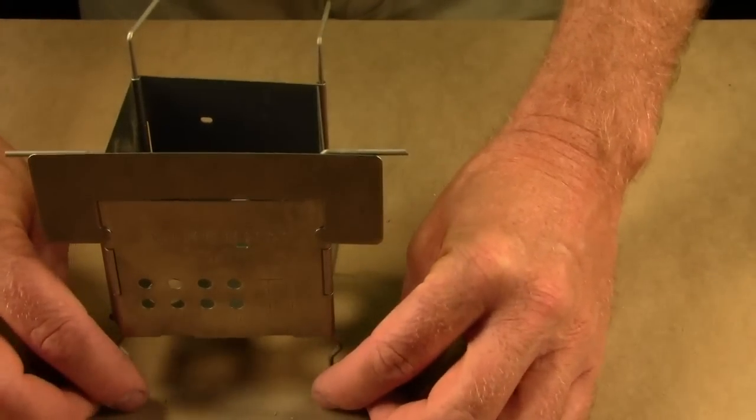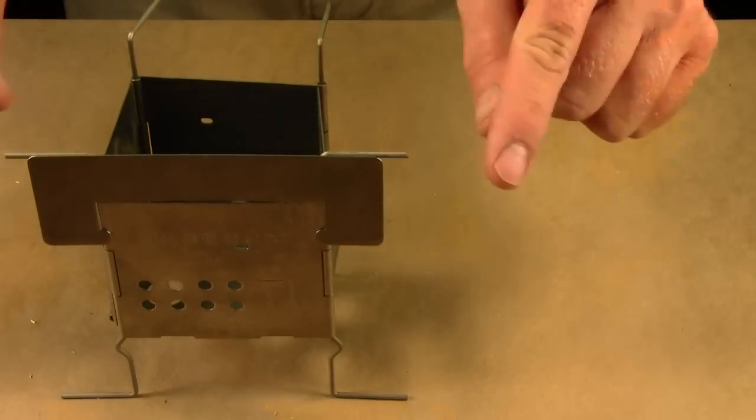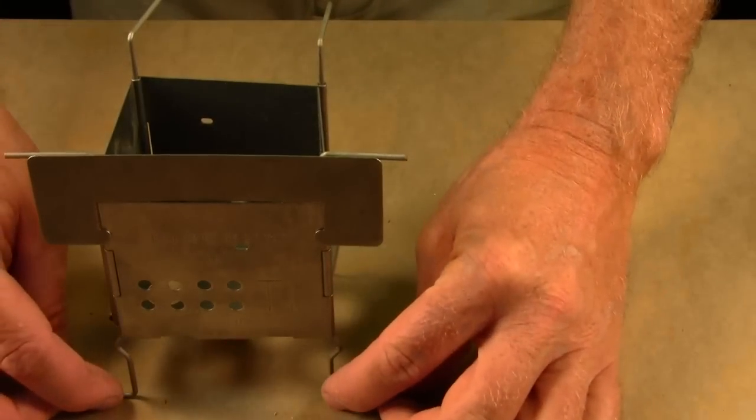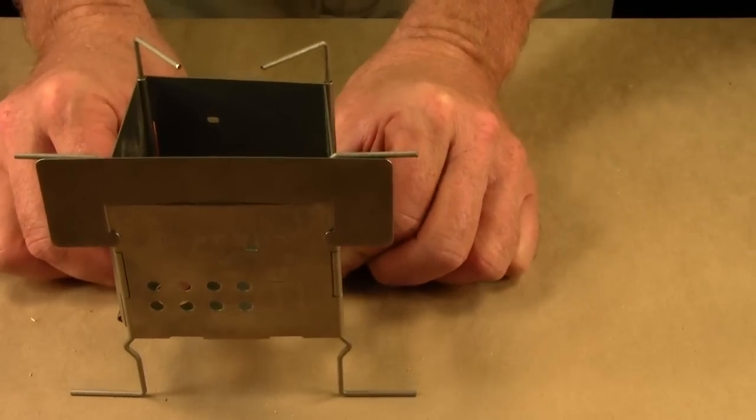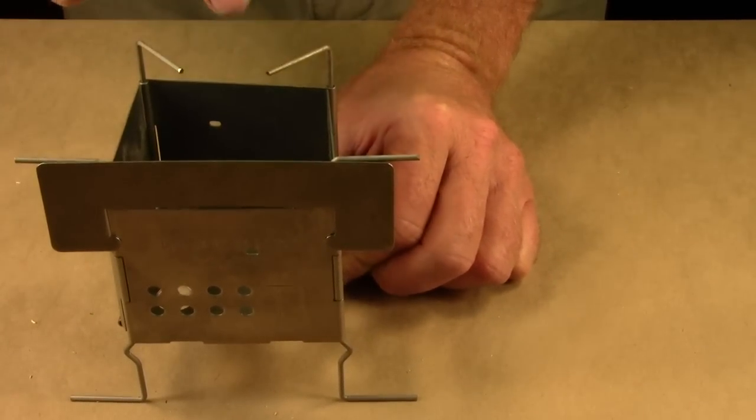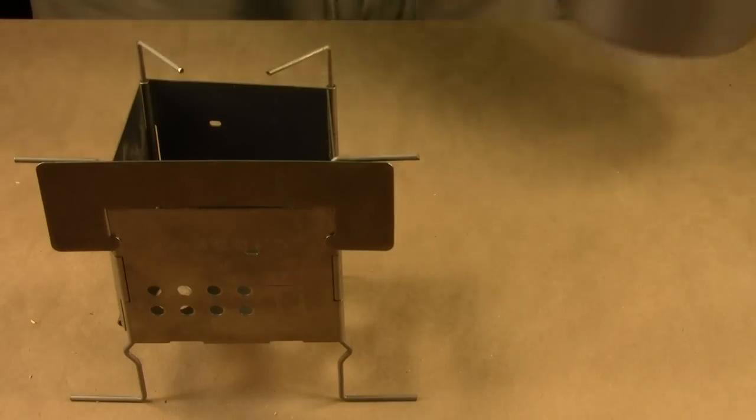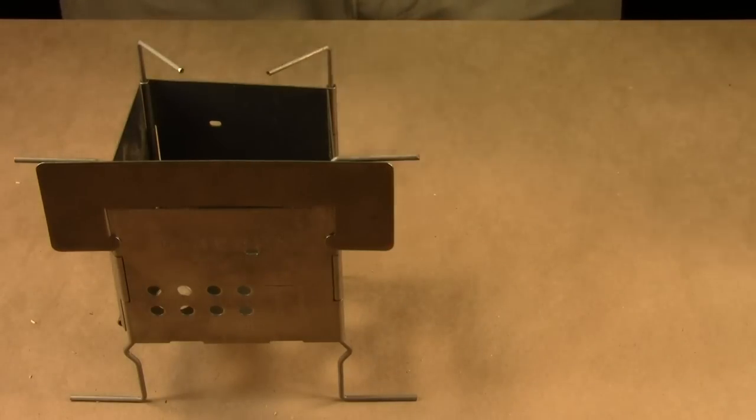So what I do is generally, I'll just have these legs going outwards. And then I have, if I have a small pot, I have these back legs going inwards to support the small pot.